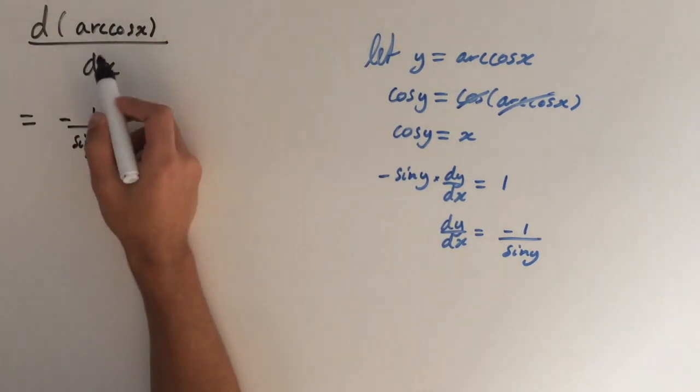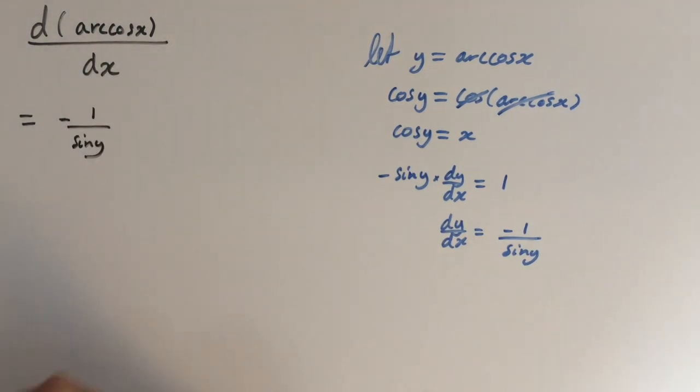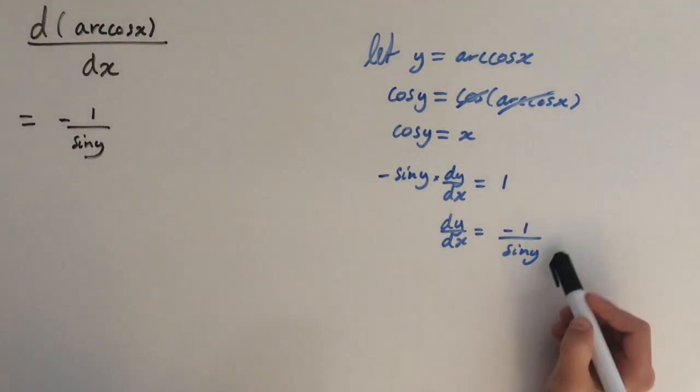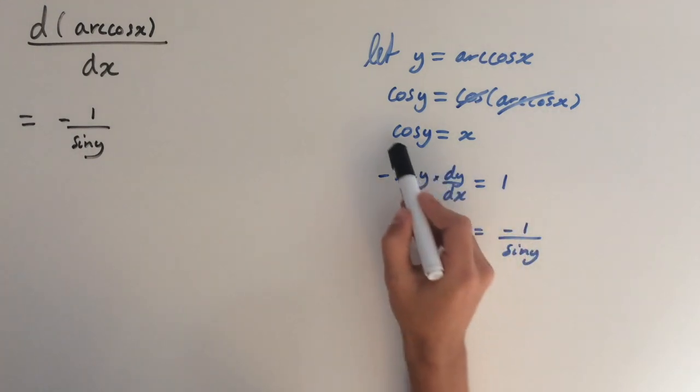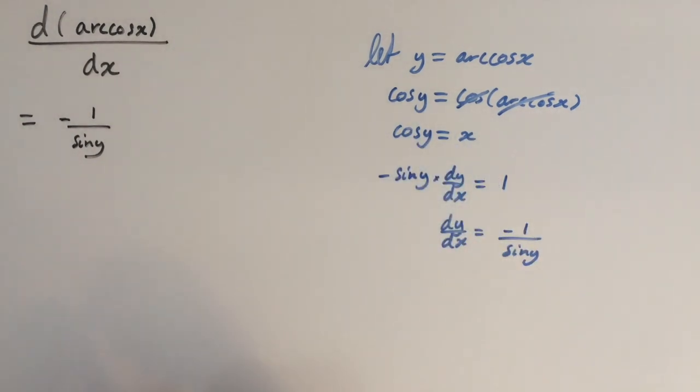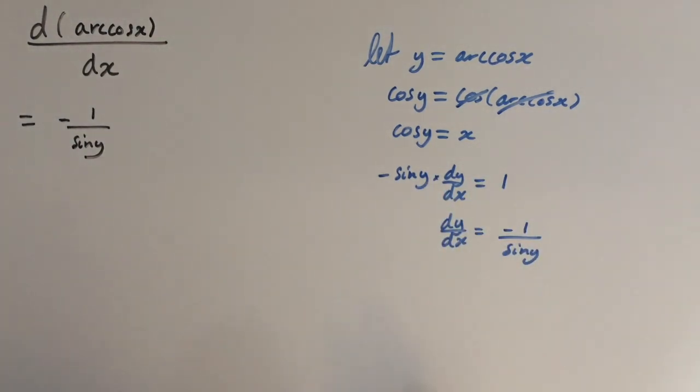But we want to find the derivative of arccos of x in terms of x's. And at the moment we've got y. But we've got an expression here that relates y with x. So what we want to do is express sine of y in terms of cos of y. And then we can substitute x in.